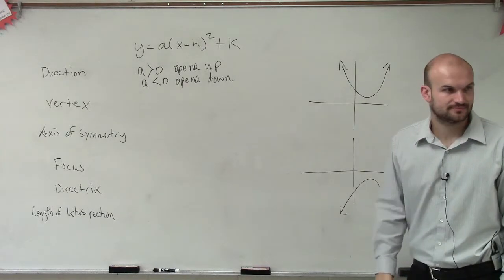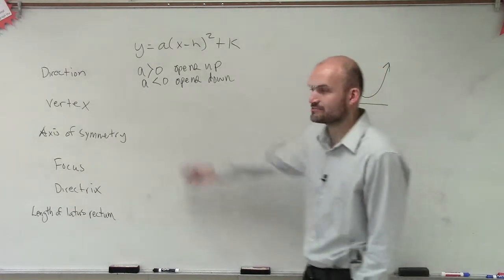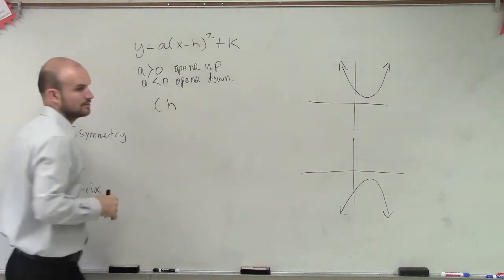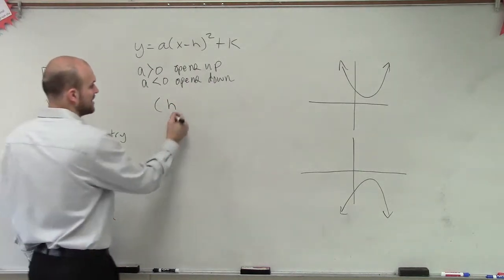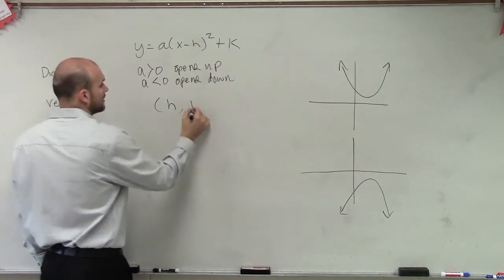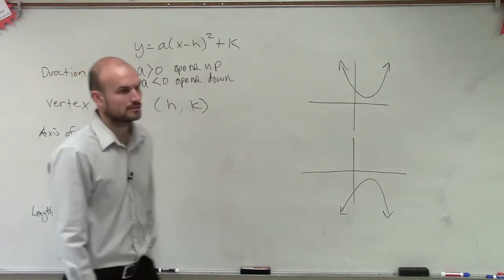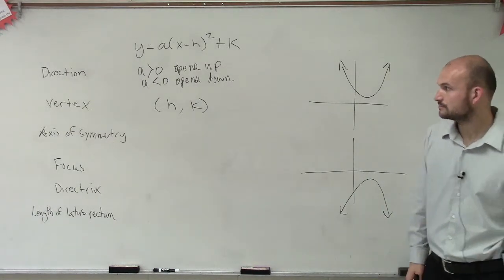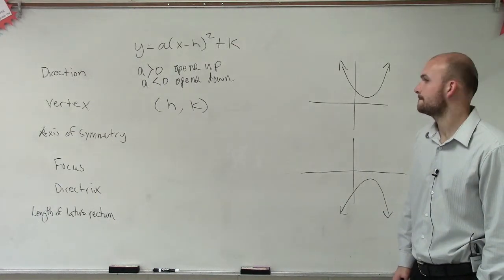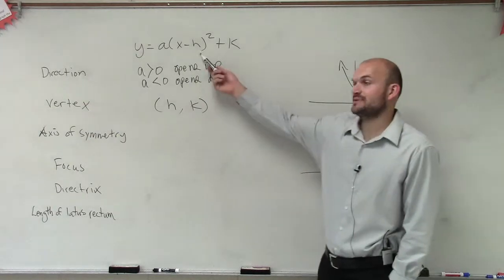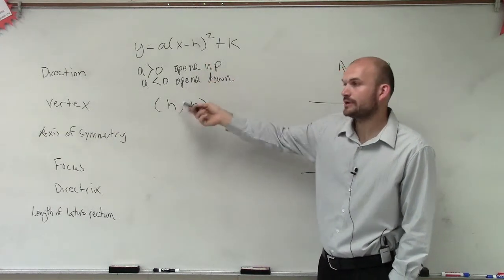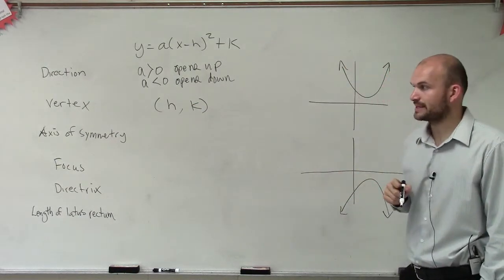Now we have the vertex, right? Vertex, you guys remember for this one, is always going to be? Guys, vertex. H, comma? Okay. So we have H, comma K for your vertex. Opposite of H. Well, yeah, in the formula, it's opposite of H. So if it's X minus 3, then your H would be 3. But it's H, comma K is your vertex.